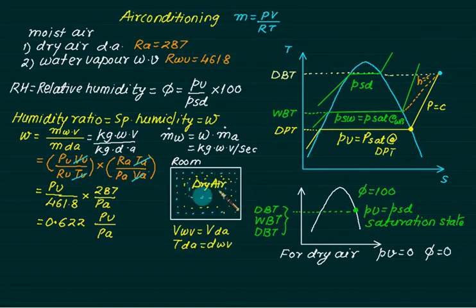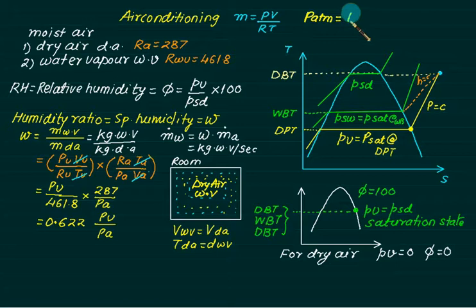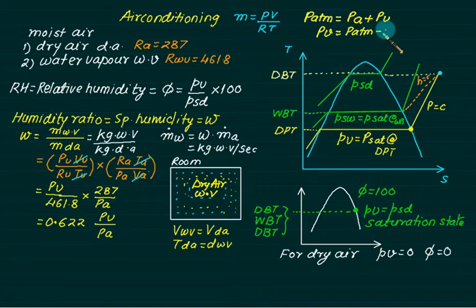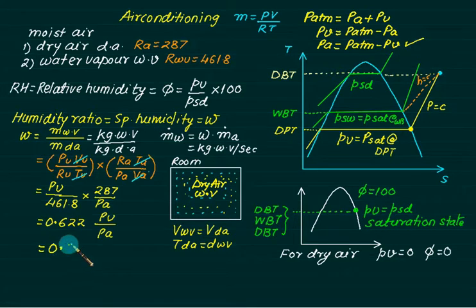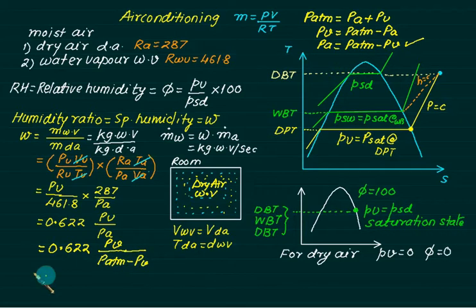By Dalton's law of partial pressures, the total (atmospheric) pressure equals the sum of the partial pressures of its constituents: P_atm = Pa + Pv. Substituting Pa = P_atm − Pv into the formula, we get: w = 0.622 × Pv / (P_atm − Pv). This is the specific humidity formula with units of kg of water vapor per kg of dry air.